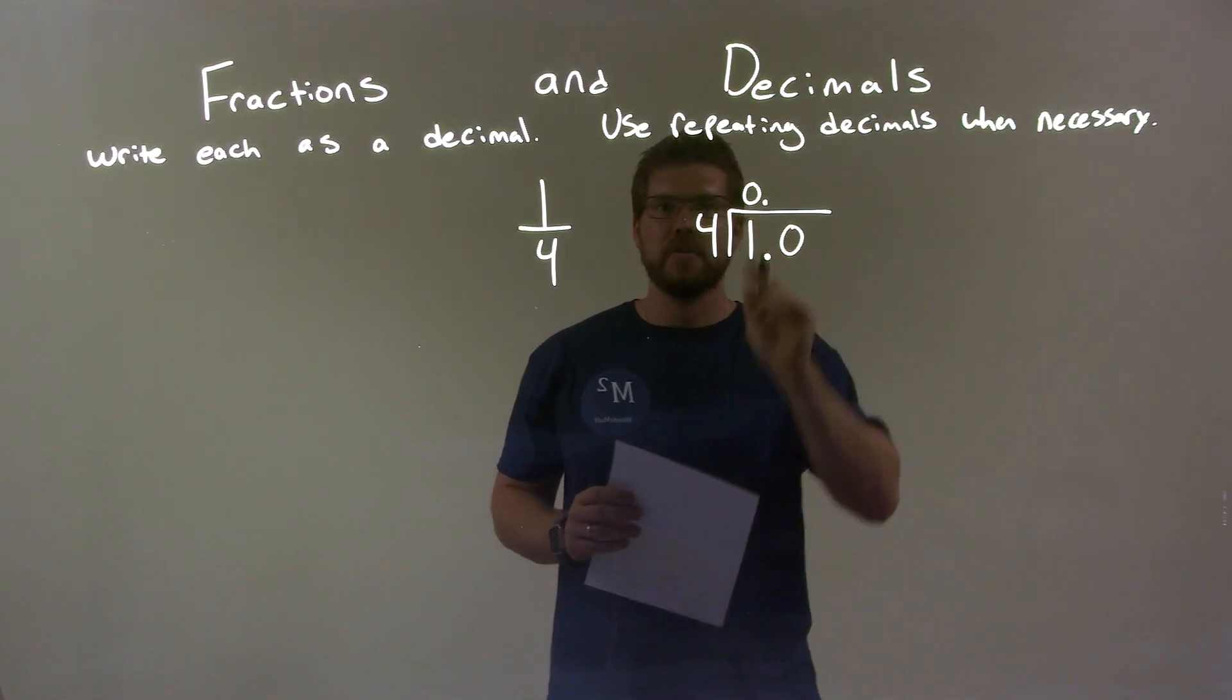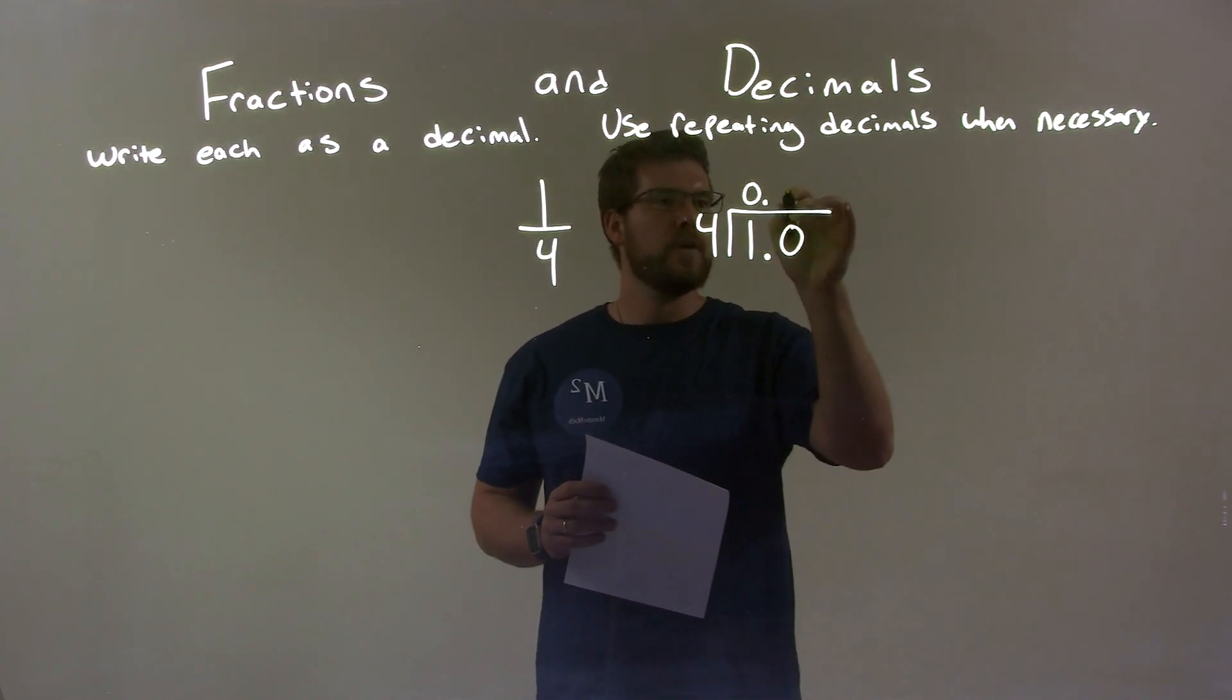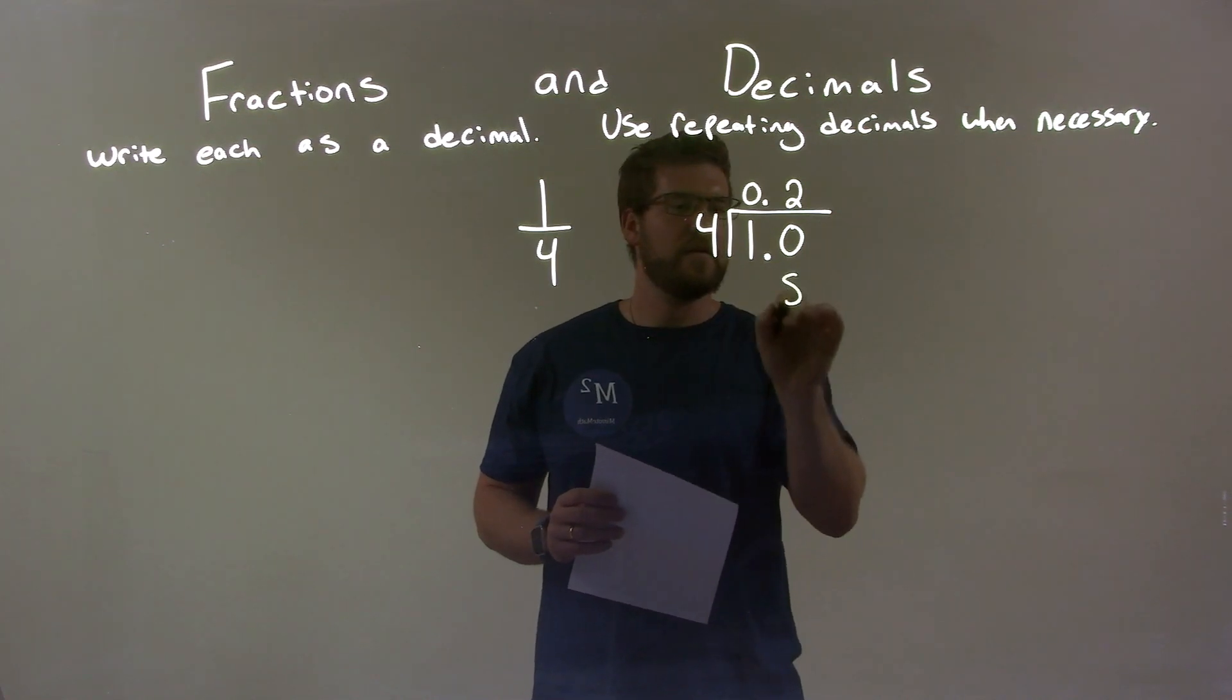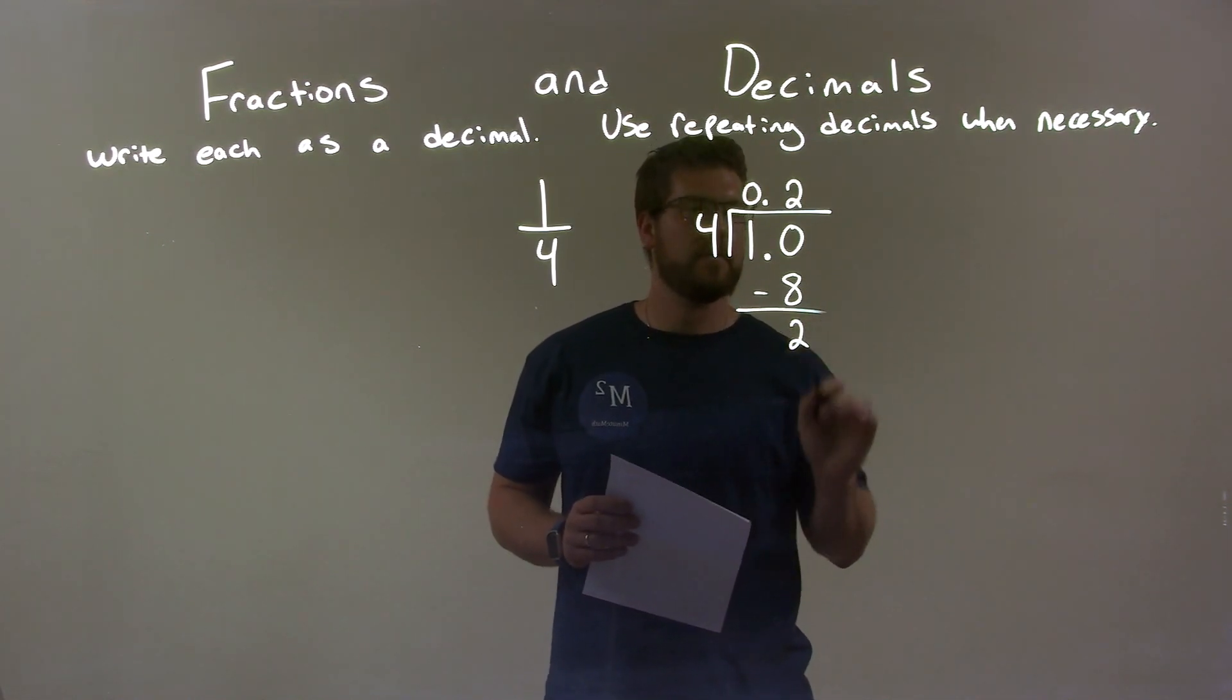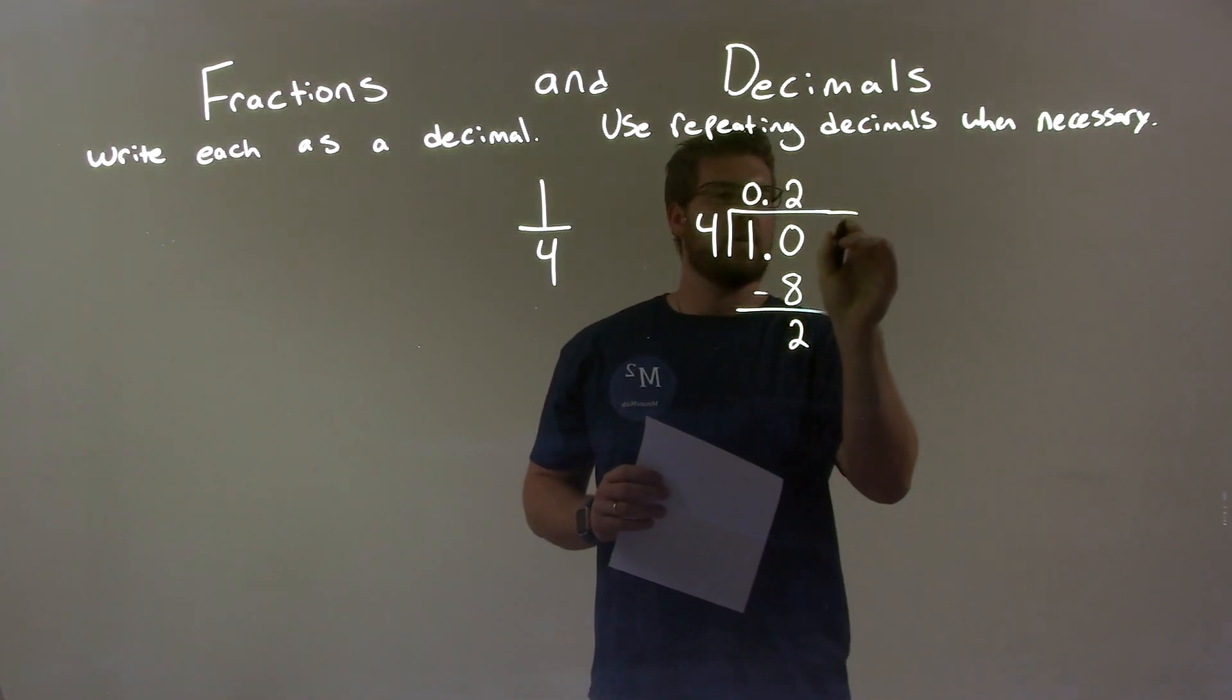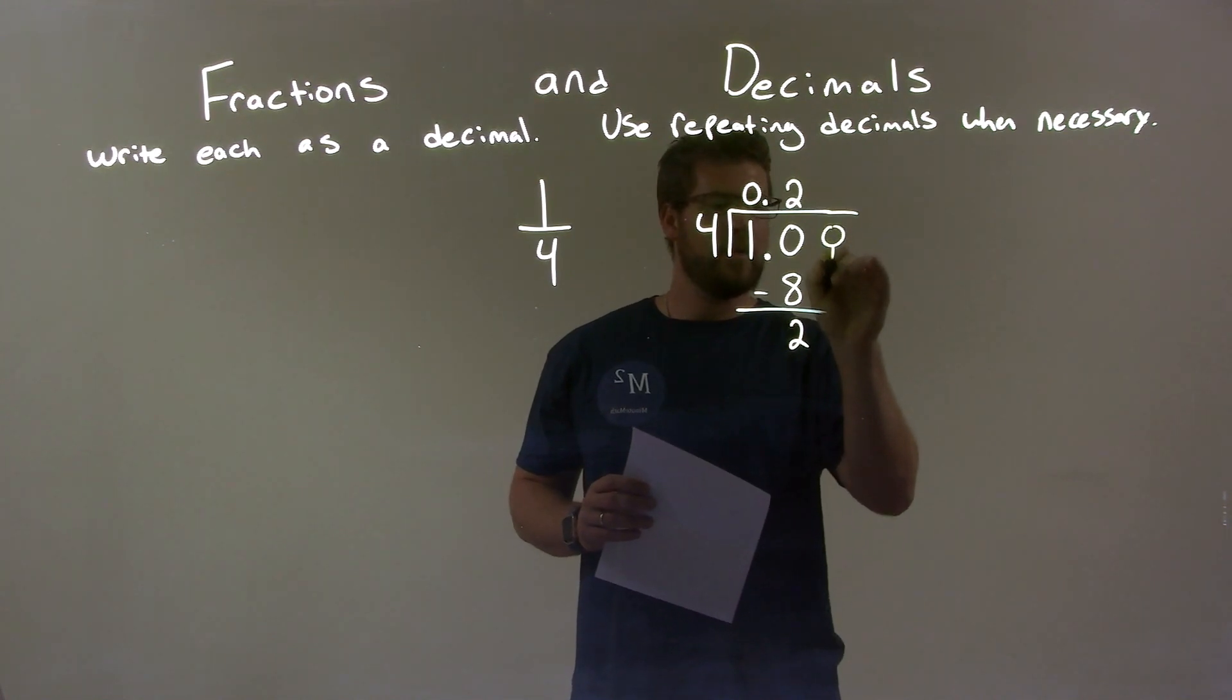Four goes into ten two times, right? Two times four is eight. We subtract that, ten minus eight gives me two. So then we add another zero here and bring that down.